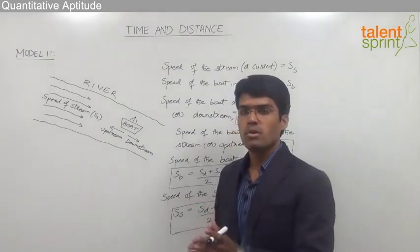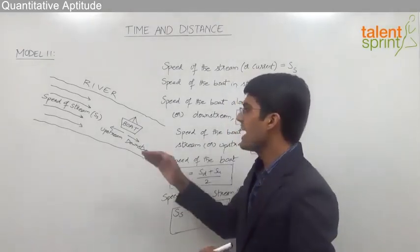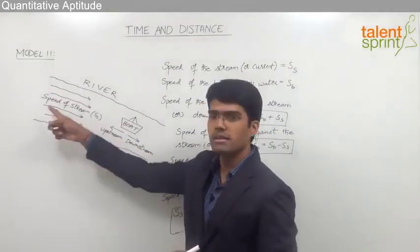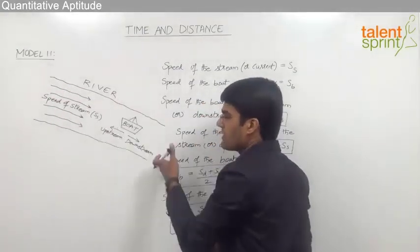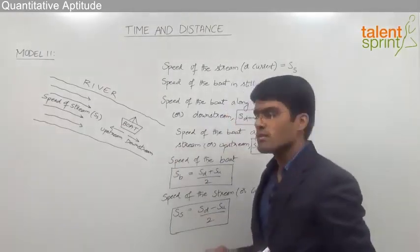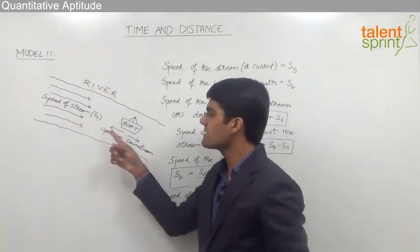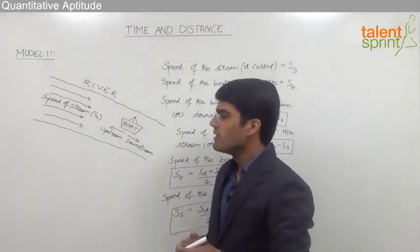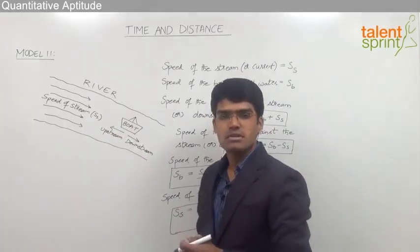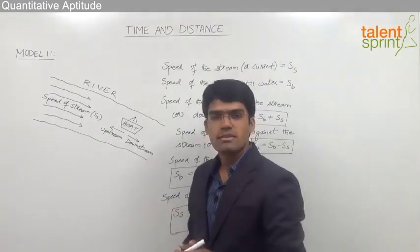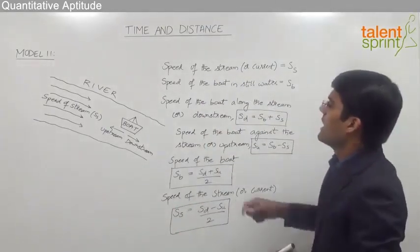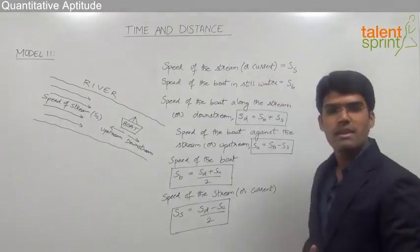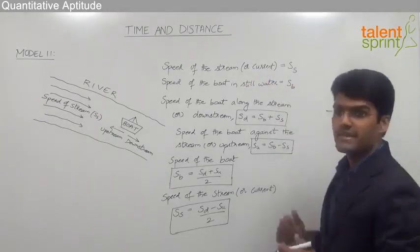The boat can move in two possible directions: either it can go against the flow of the stream, which is referred to as upstream, or along with the flow of the stream, that is downstream. So upstream is nothing but opposite to the stream and downstream is in the same direction as the stream. The speed of the stream or current, also called speed of the river, is equal to ss.